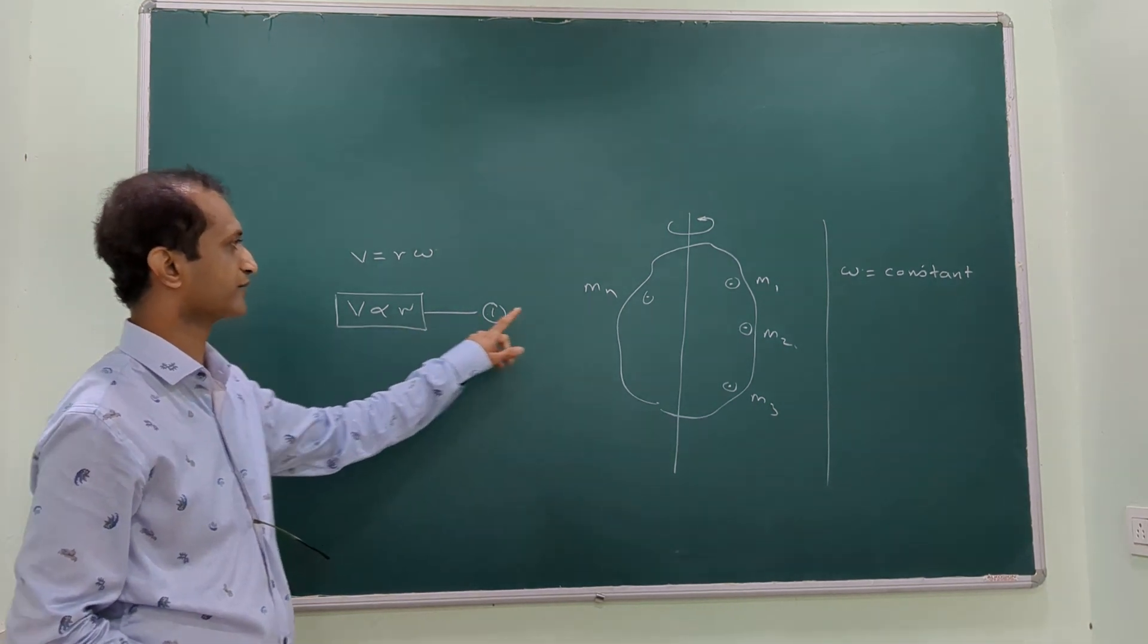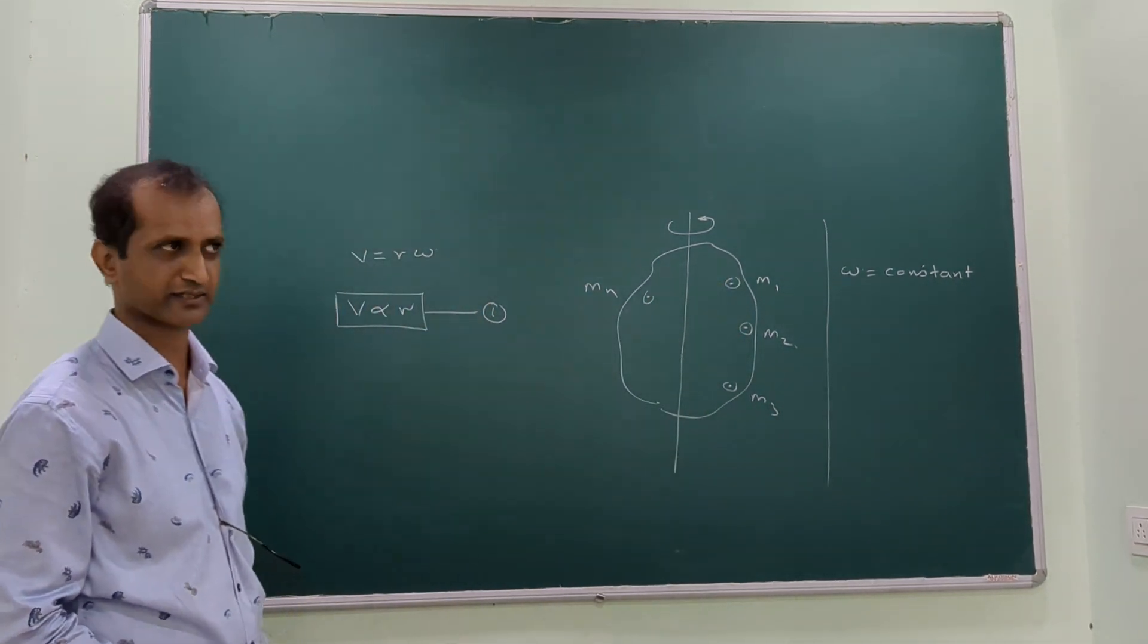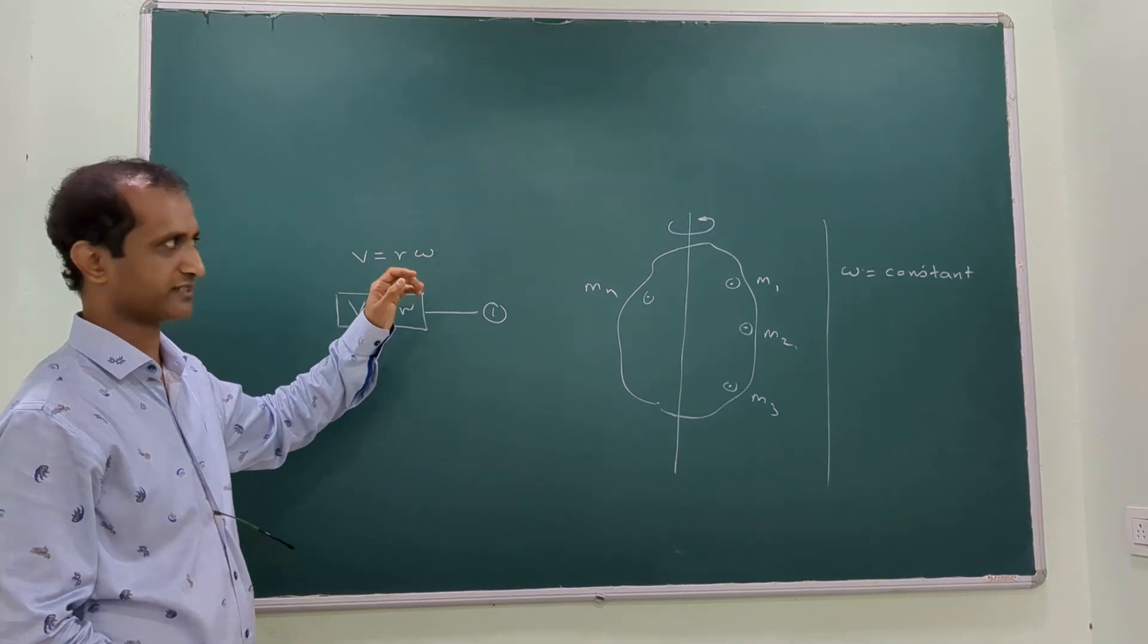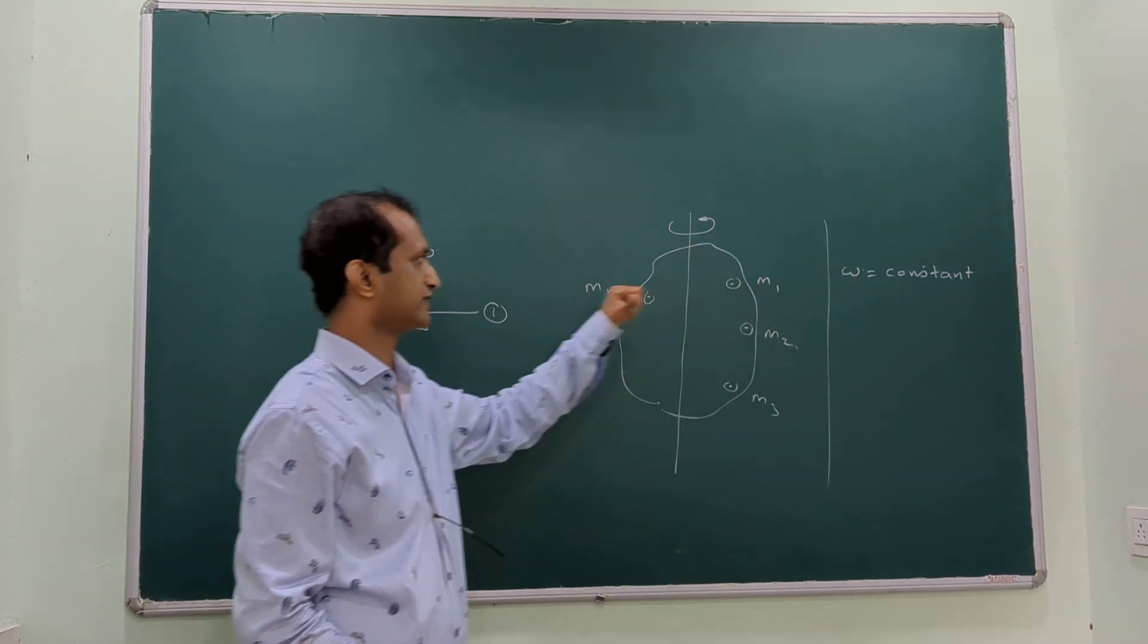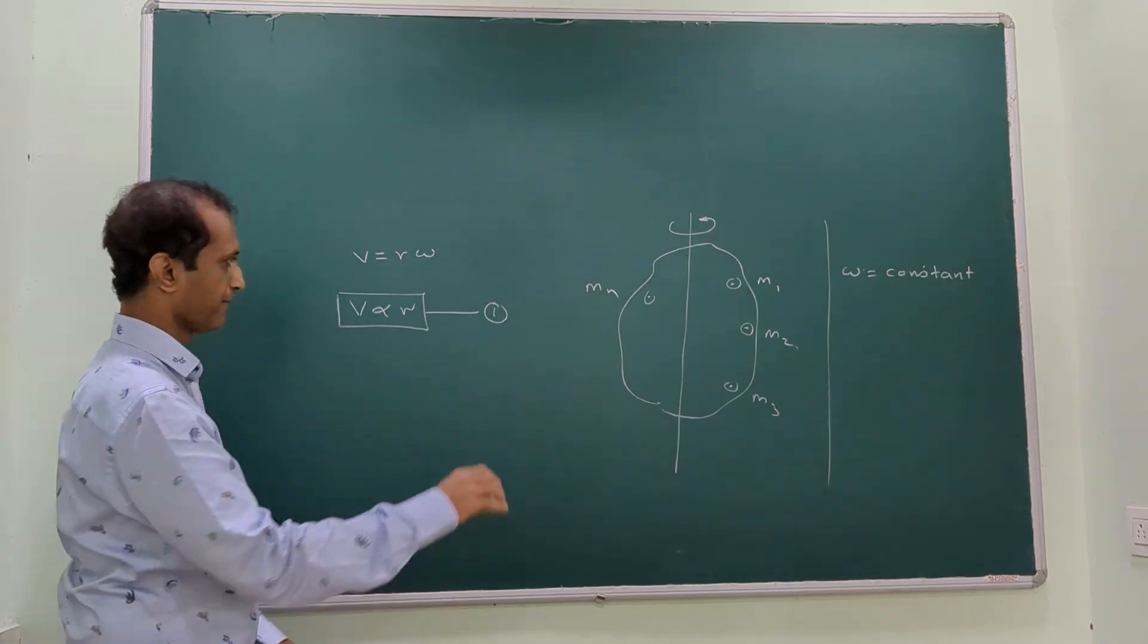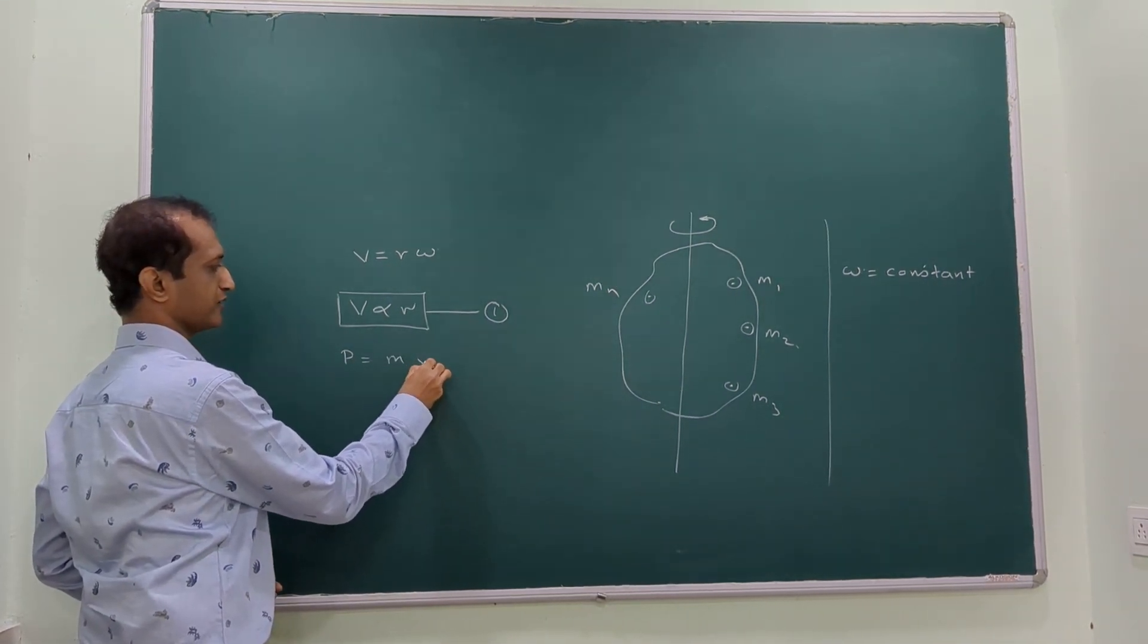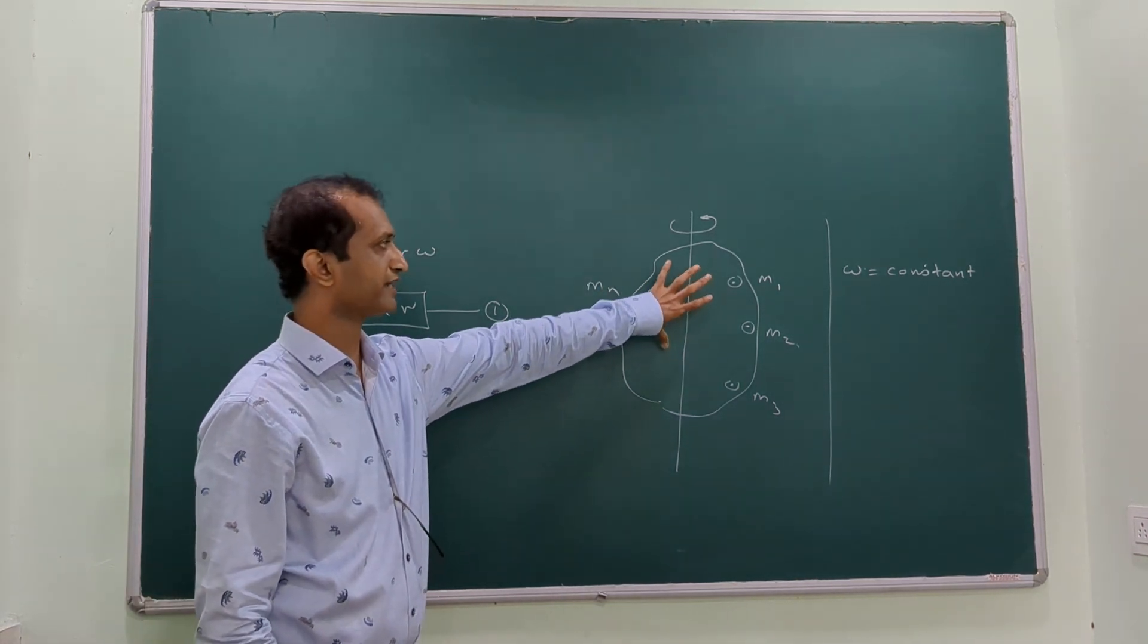As the distance from the axis of rotation increases, the linear velocity also increases. This is angular velocity, this is linear velocity. By definition, momentum is mass times velocity. Since the mass of the entire system is constant, momentum is directly proportional to velocity.